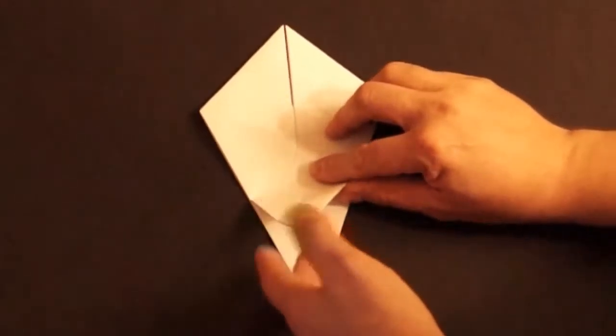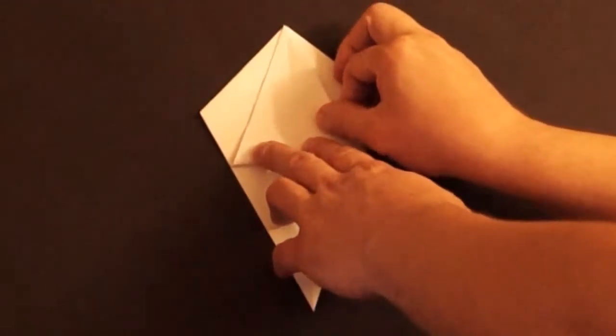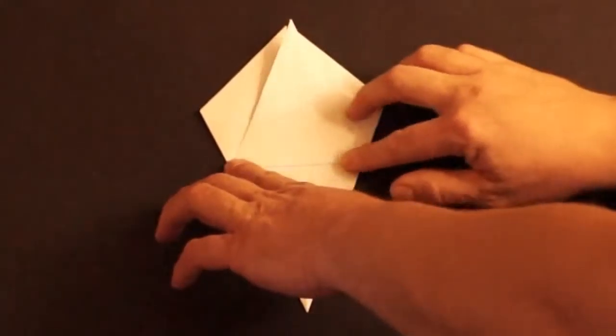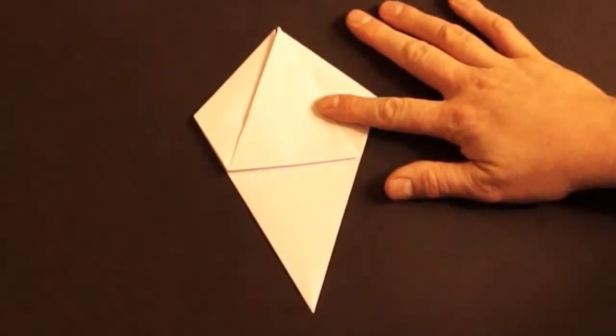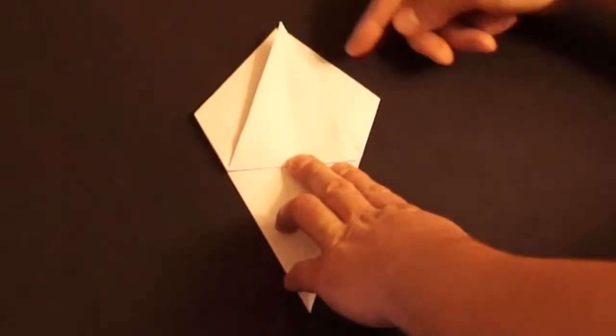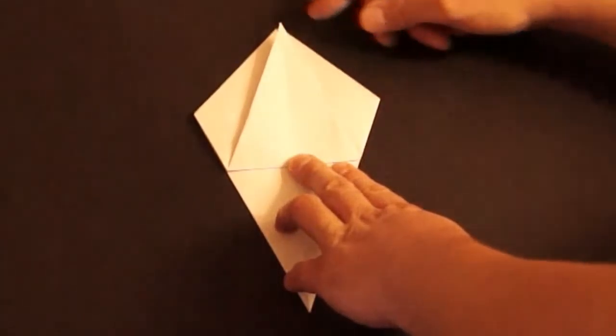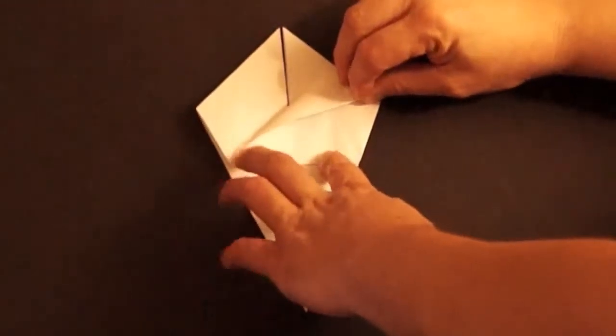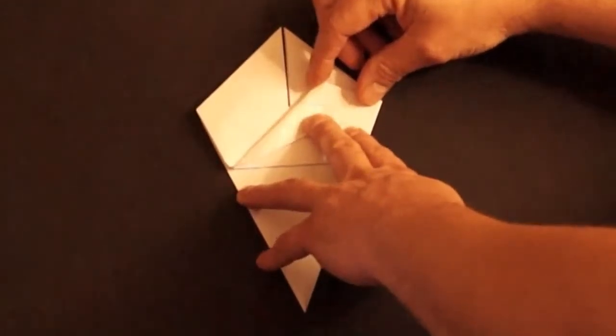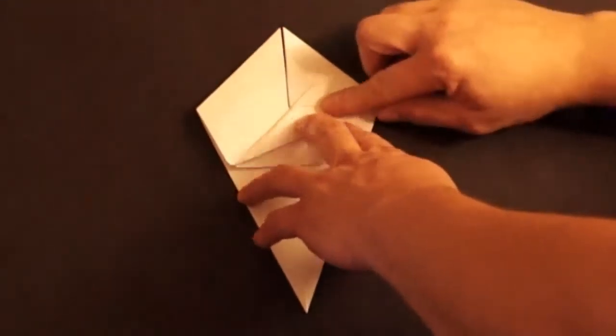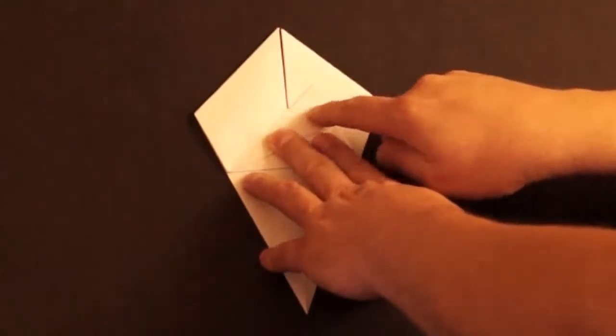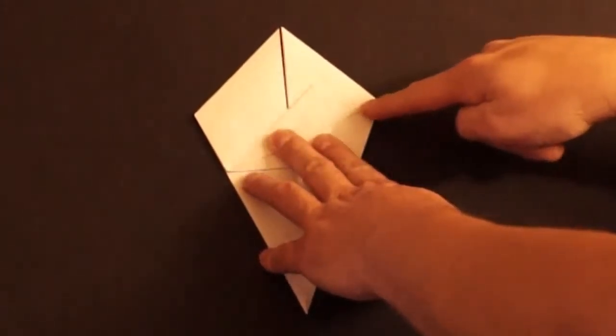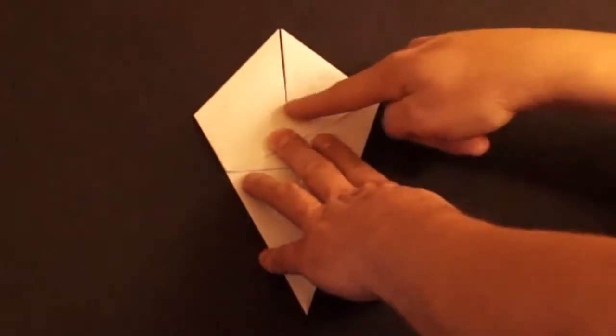Okay, next we fold this point at the bottom all the way up to the top. Press down good on your fold. Then we're going to fold this point over so that it touches in the center on this side, so we fold it at an angle like this so it will touch on the center on the side. There is a division here on the paper that will line up with this crease right through here.